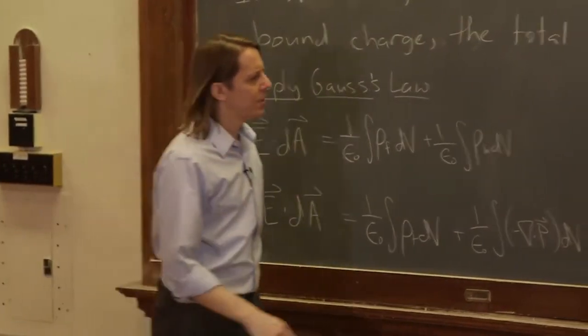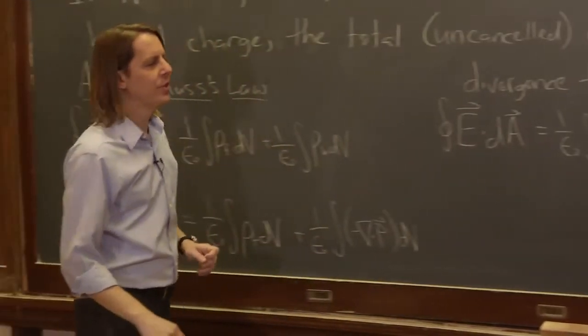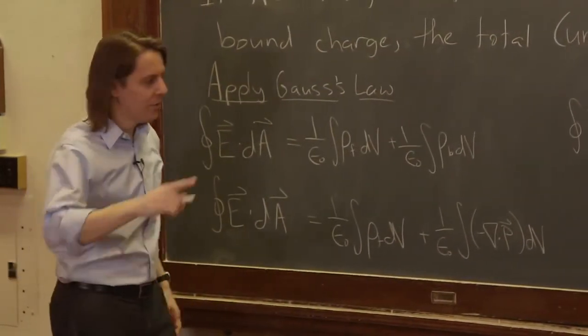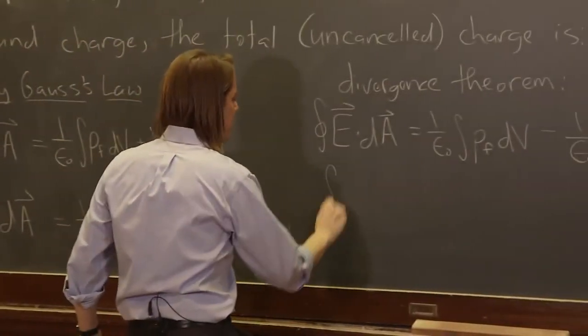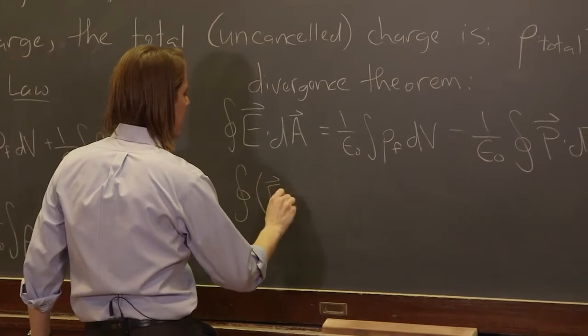Well, now if we look, we see that these are the same integral. We're over the same closed surface and one is E and one is P. So we can bring this over here and say it's the integral around the closed surface of E plus, I'm sorry, we also have to multiply through by epsilon naught.